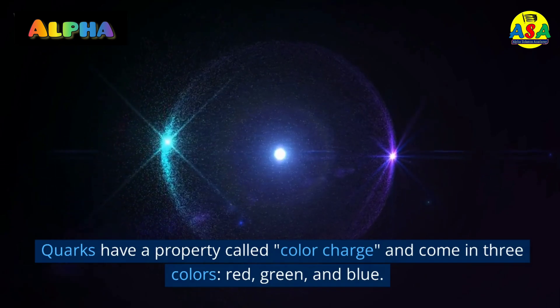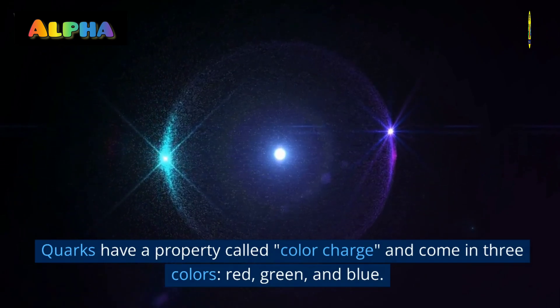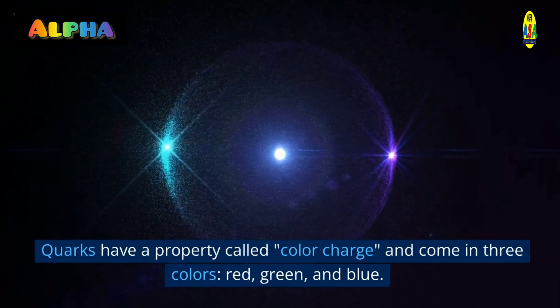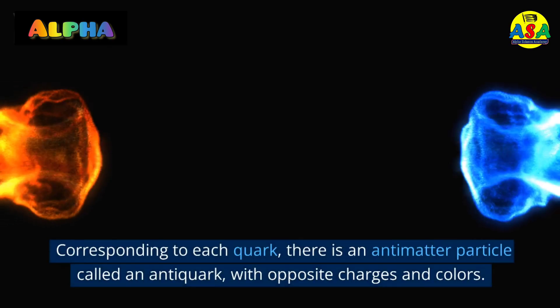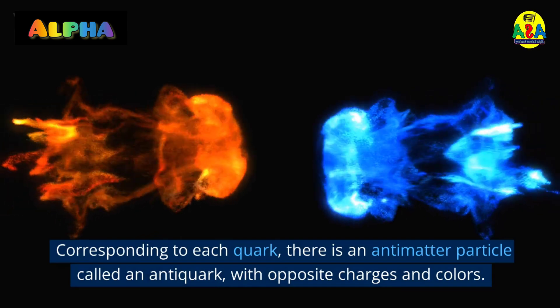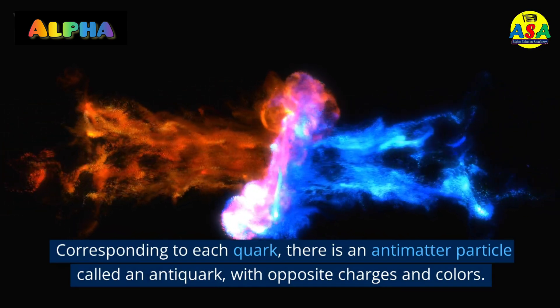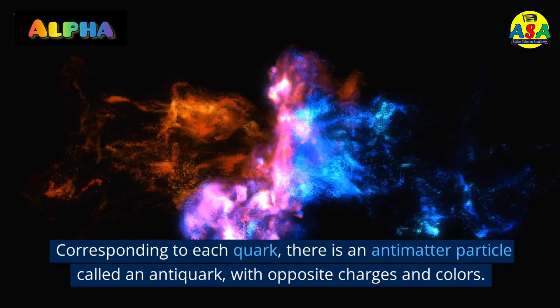Quarks have a property called color charge and come in three colors: red, green, and blue. Corresponding to each quark, there is an antimatter particle called an antiquark, with opposite charges and colors.